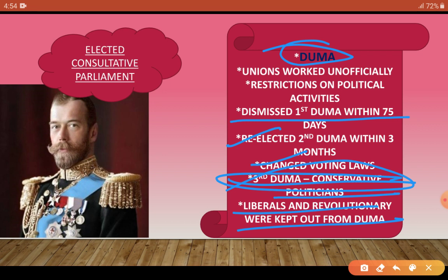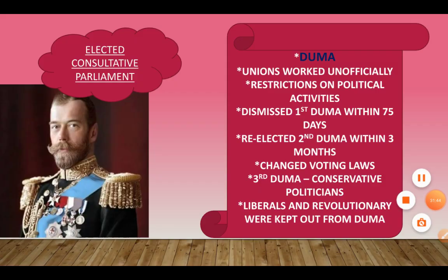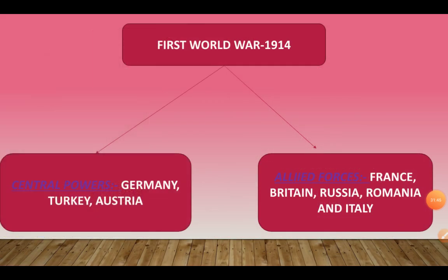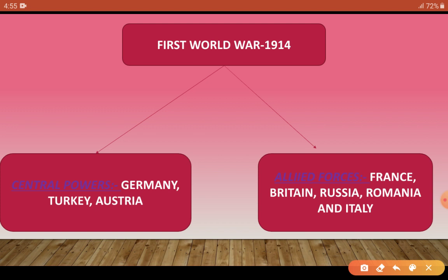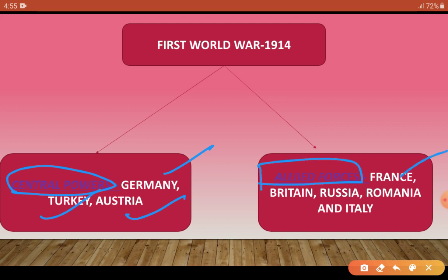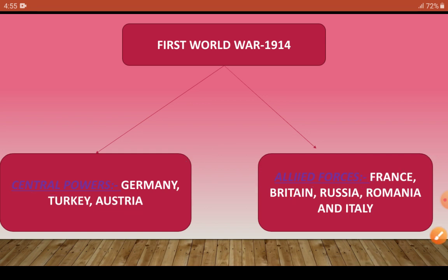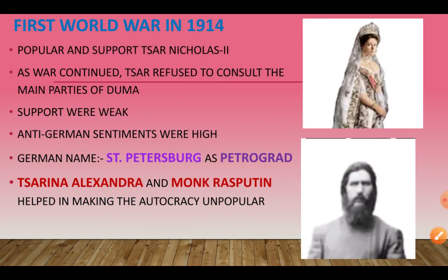Now the First World War begins. It was fought between two sides — the Central Powers: Germany, Turkey, and Austria; and the Allied Forces: France, Britain, Russia, Romania, and Italy. The First World War started in 1914.